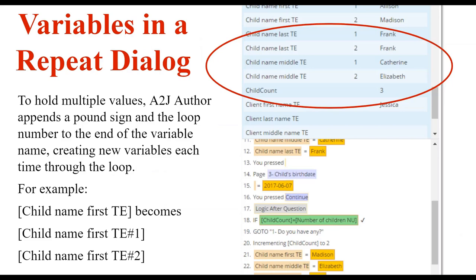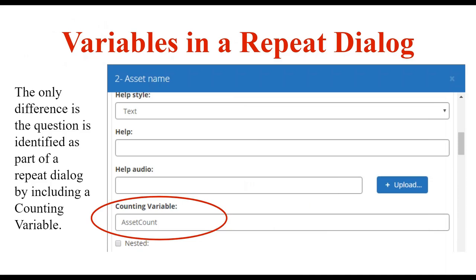Once that box is checked and indexing starts, you can see in the debug panel or script panel that the answers are now child name last TE1, child name last TE2, child name middle TE1, child name middle TE2 — holding multiple values for each option the end user has given. You can use that information in variable macros to call out specific iterations of the loop. The only difference in the question itself is that you include the counting variable on that question — that's the only thing making a repeat-loop question different from other questions.